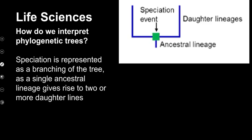Now let's have a look at speciation. We covered speciation in previous lessons, where we saw that when a population is split into two and over time they change through natural selection, they become new species. Here's our ancestral lineage — the ancestor — and then something happens here: a speciation event. That speciation event caused this ancestral lineage to be split into two groups, either by a geographic barrier or some kind of reproductive isolating mechanism, and that caused two new daughter lineages.